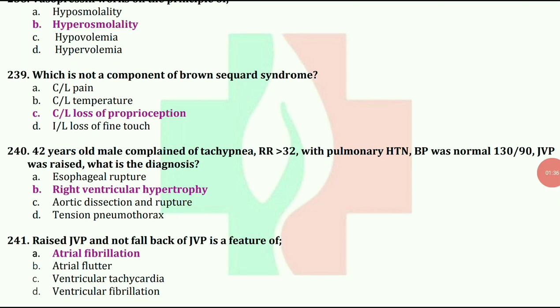42-year-old male complains of tachypnea, respiratory rate more than 32, with pulmonary hypertension. Blood pressure was normal at 130/90. Jugular venous pressure was raised. What is the diagnosis? The answer is right ventricular hypertrophy.